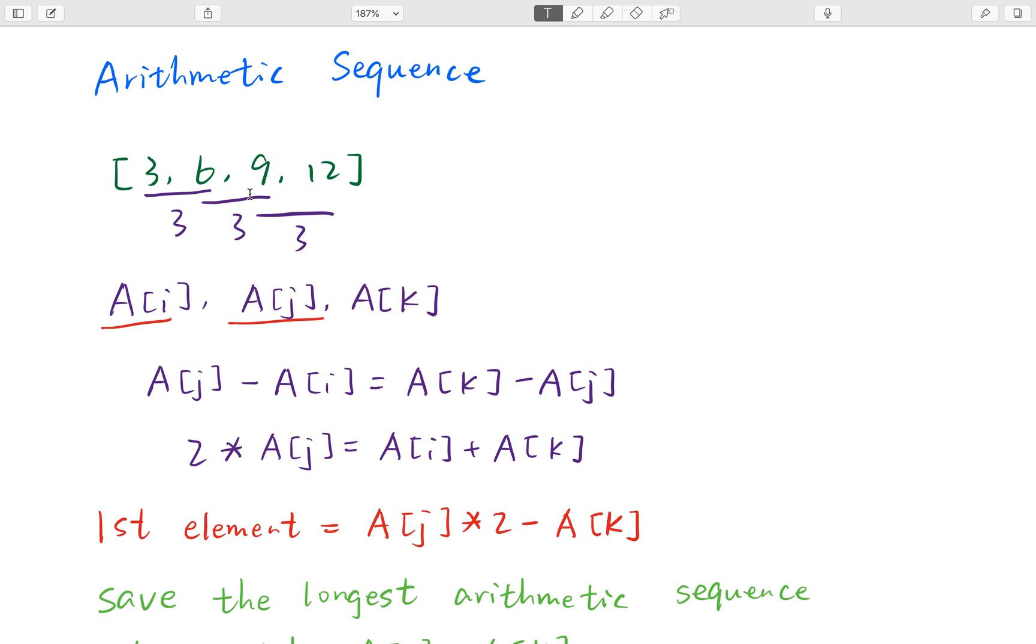So when we are given two elements, we can try to find whether we have the first element preceding in the previous elements. So like if the current two elements is 6 and 9, we know the first element we need to get is 6 times 2 minus 9, which is 3. And we will try to figure out whether there is a 3 before 6. Yes, we can find it. So that means the longest arithmetic sequence ending with 6 and 9 is 3, right?